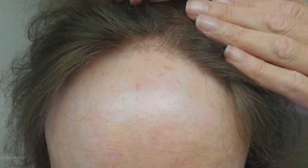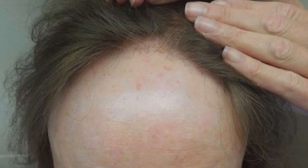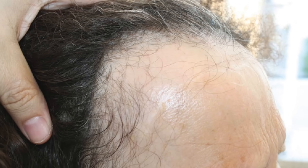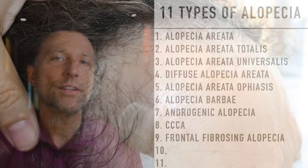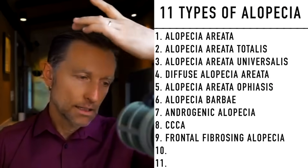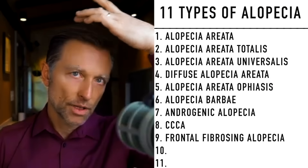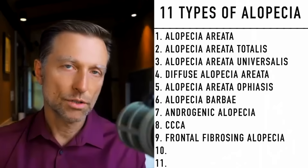The next one is called frontal fibrosing alopecia. This involves the sideburns and the frontal part of your head, and mostly affects menopausal females, though it can also affect men. You'll see a lot of receding of the hair in that area due to scar tissue. Some people may also lose their eyebrows or eyelashes with this condition.